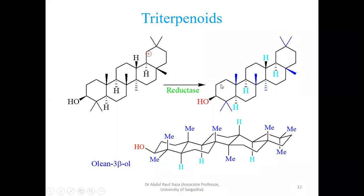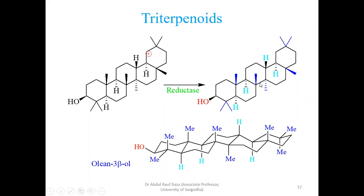These molecules have four ring junctions — all of them are trans. You observe: methyl and hydrogen trans, methyl and hydrogen trans, hydrogen and methyl trans, hydrogen and methyl trans — all ring junctions are trans, so they exist in a trans conformation. I have presented five cyclohexane rings fused with each other, and eight methyl groups are highlighted on this plane.